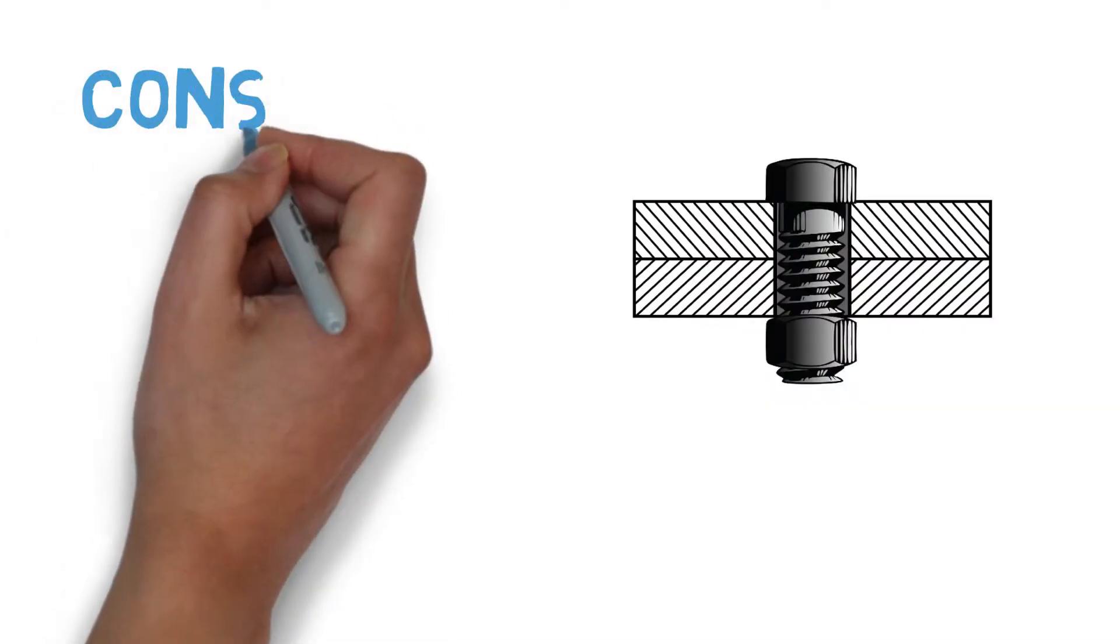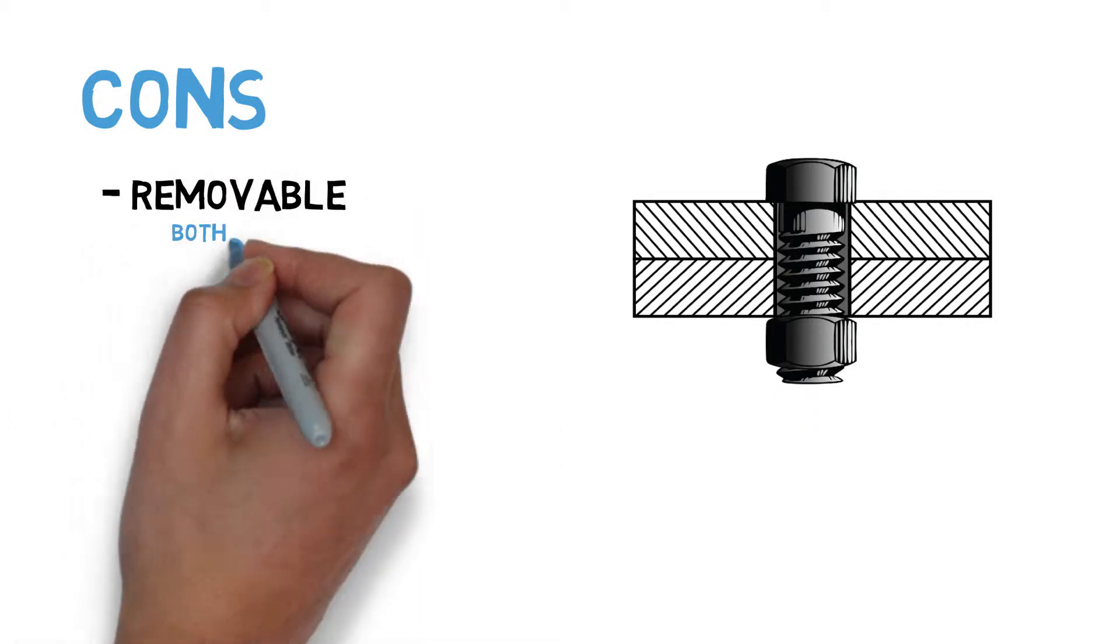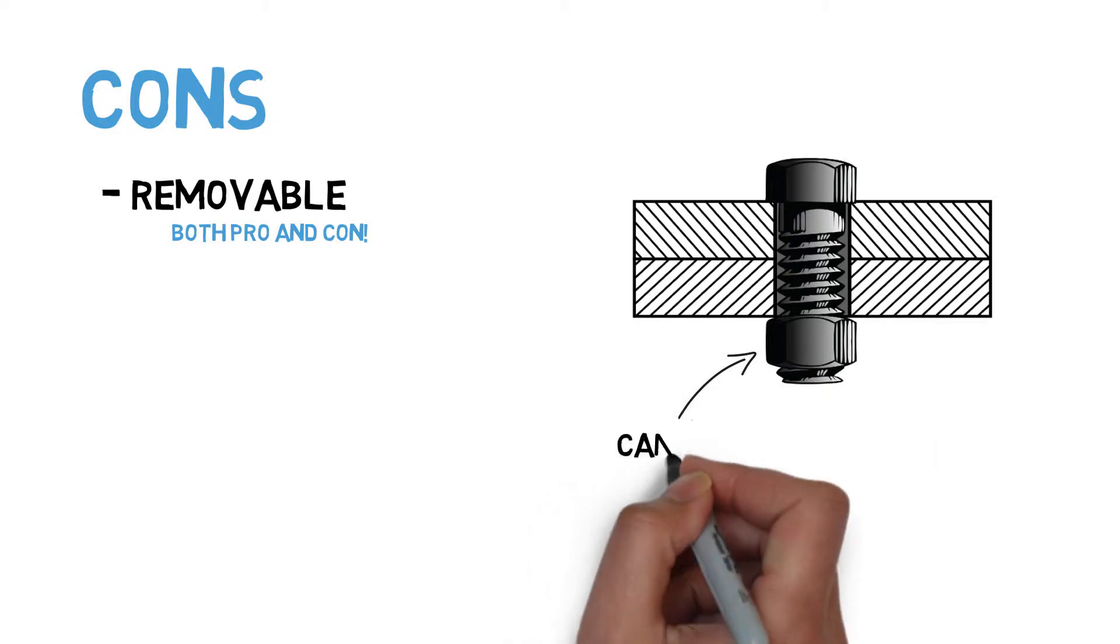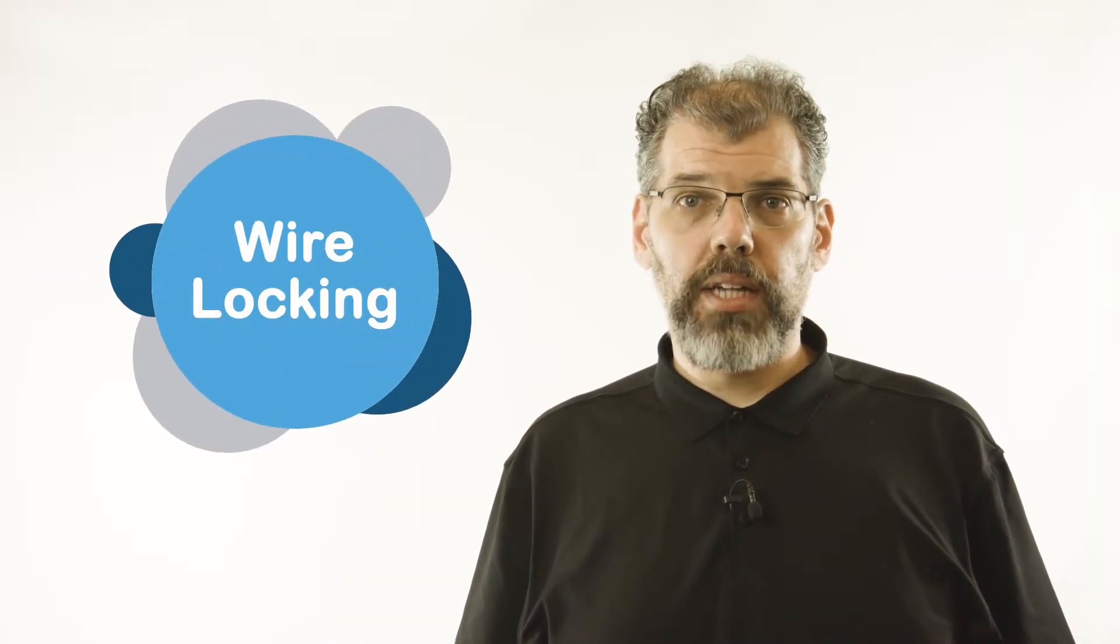Moving to some cons of threaded fasteners, the fact that they are removable can also be a negative attribute. During operation, loading and vibration can cause threaded fasteners to become loose and even fall out. For this reason, threaded fasteners are typically wirelocked in aircraft applications.